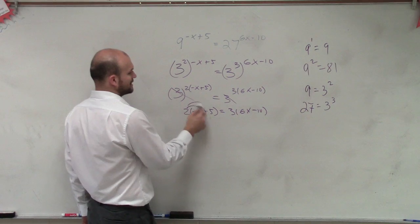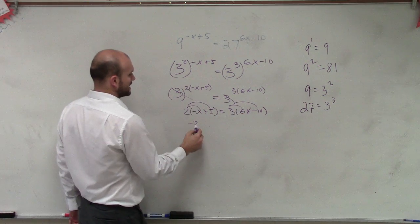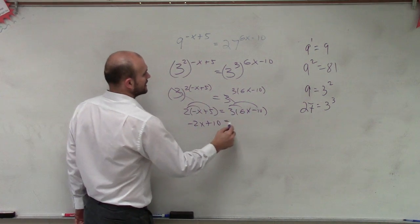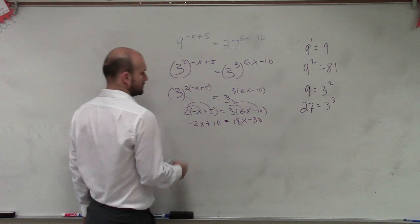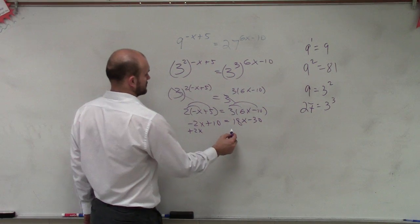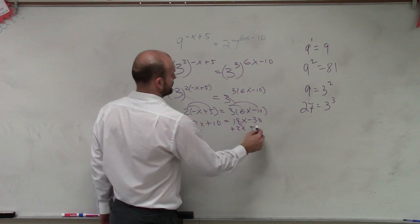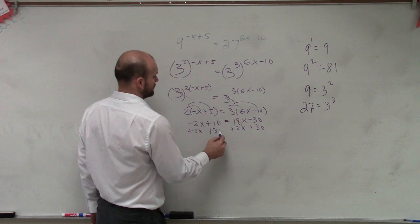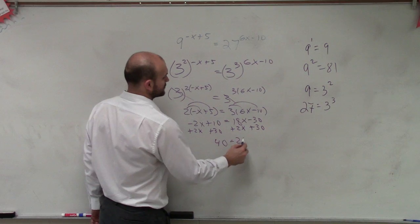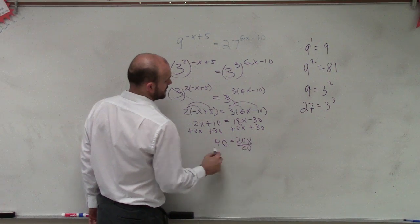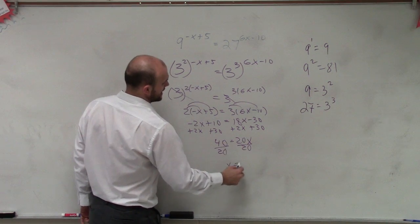So now you apply distributive property. Negative 2x plus 10 equals 18x minus 30. Add 2x. Plus 30. 40 equals 20x. Divide by 20. x equals 2.